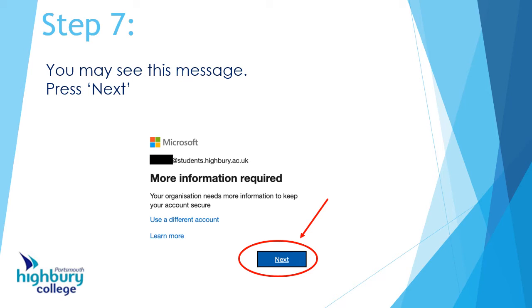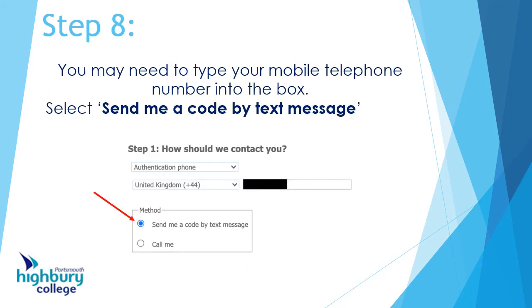Once you've put your password in, it's possible — not always, but it might say — that you have to give more information. Don't worry, that's okay. All you need to do is press the Next button. Then you need to put your telephone number into the box shown in the picture, and choose the option that says 'Send me a code by text message' — click on the round circle where the red arrow points.